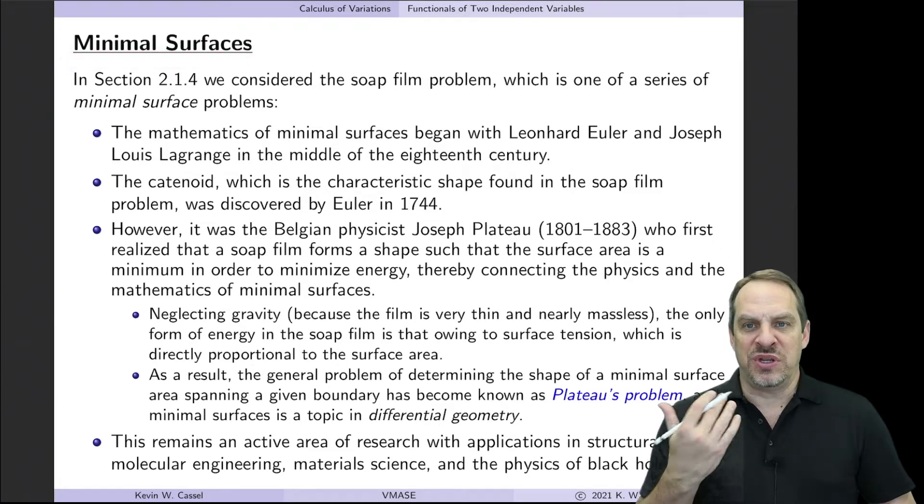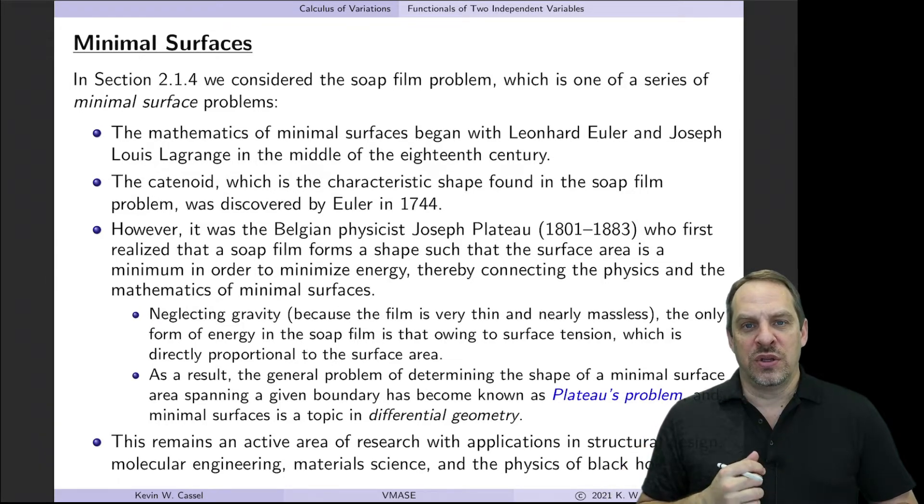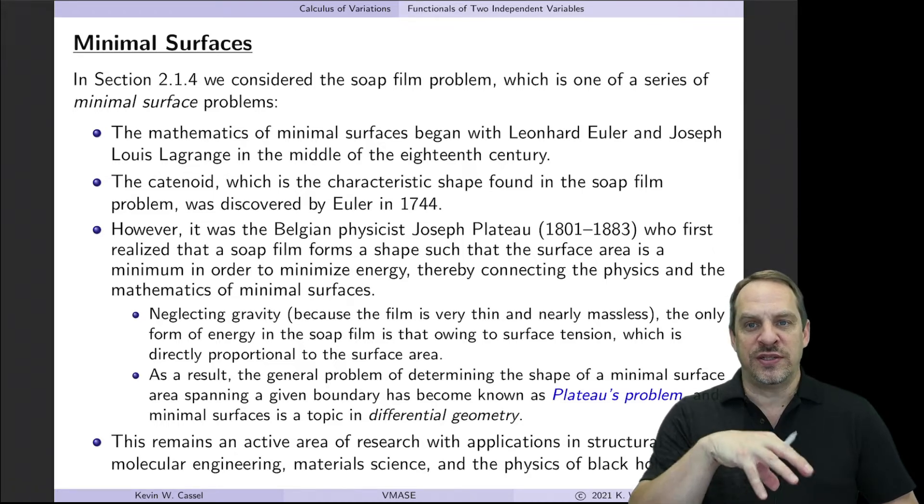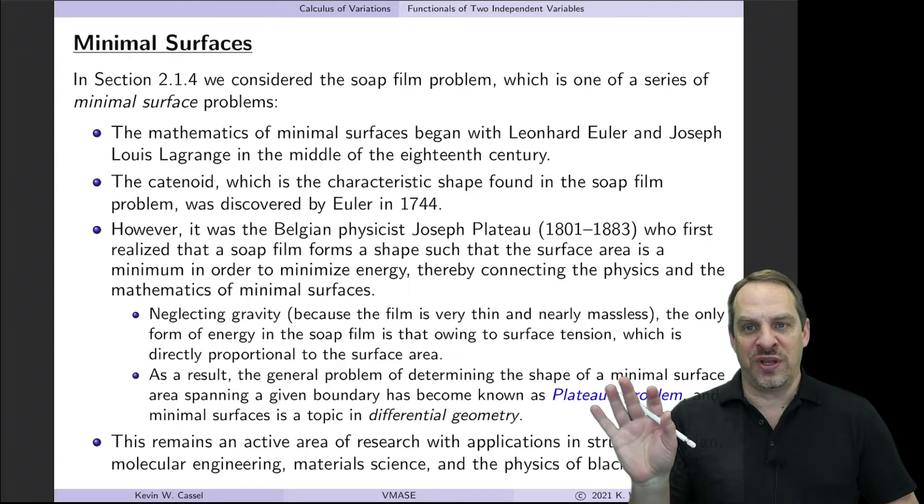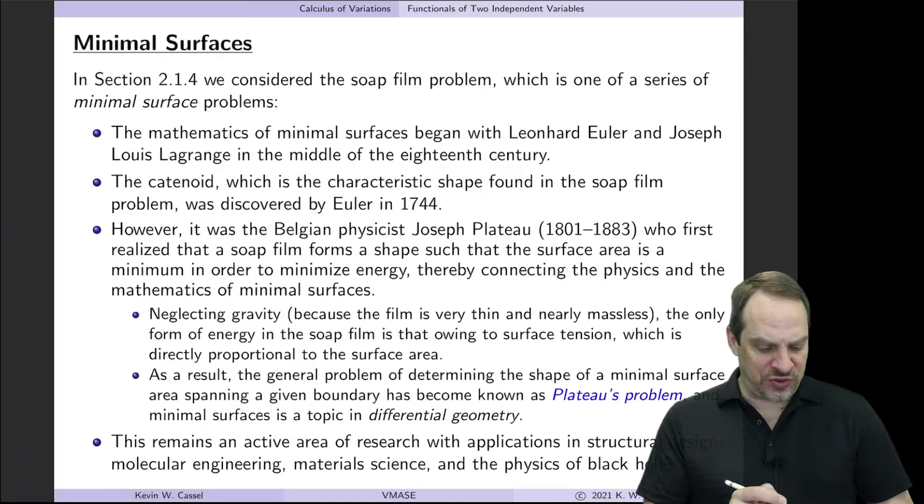We've seen some hints of this in Chapter 1, for example, the liquid drop problem. Then, we minimized the total energy of the drop, and that was due to potential energy under the action of gravity, as well as the surface energy. Well, if you throw away the gravity and you just have the surface energy, you get these minimal surface problems where you're minimizing the surface energy of, say, a soap film, for example.